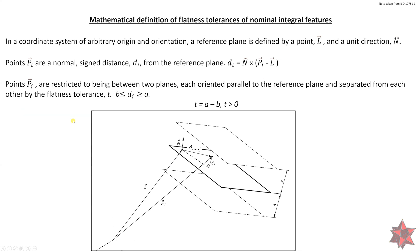Points P are restricted to being between two planes, each oriented parallel to the reference plane and separated from each other by the flatness tolerance t. So these are the two planes. And as we can see in the formula, b is smaller or equal to d which is higher or equal to a. The tolerance equals a minus b, therefore the tolerance is higher than zero.